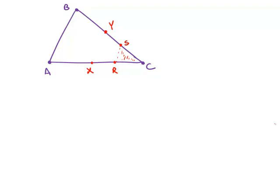Each length has been shrunk down by a factor of four, because XC is half of AC and RC is half of that, so RC is a quarter of AC. So we've shrunk it down by a factor of four.